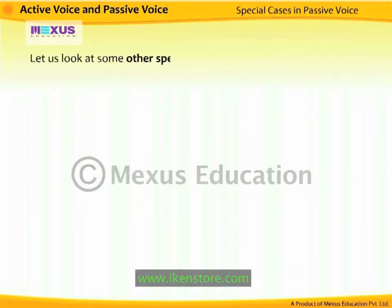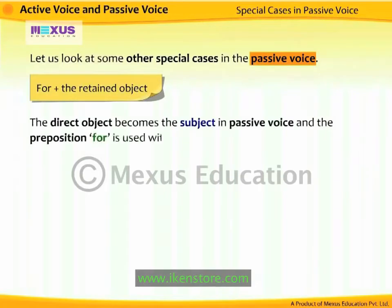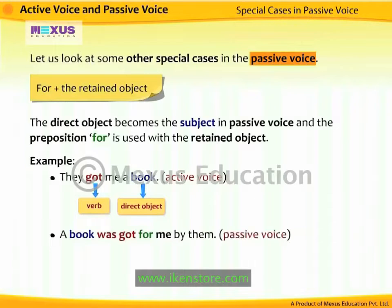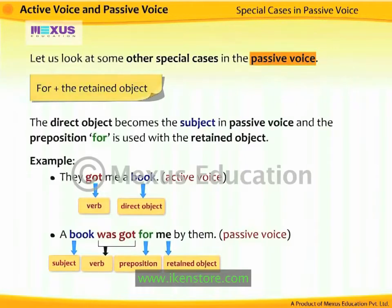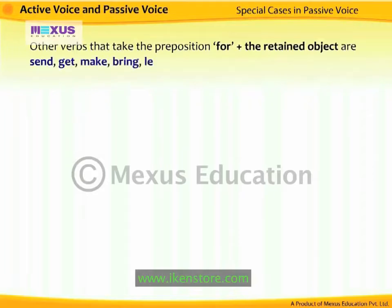For plus the retained object: the direct object becomes the subject in passive voice, and the preposition 'for' is used with the retained object. For example, 'They got me a book' becomes 'A book was got for me by them.' The direct object 'book' becomes the subject, and the preposition 'for' is used with the retained object 'me.' Other verbs that take 'for + retained object' include: Send, Get, Make, Bring, Leave, etc.